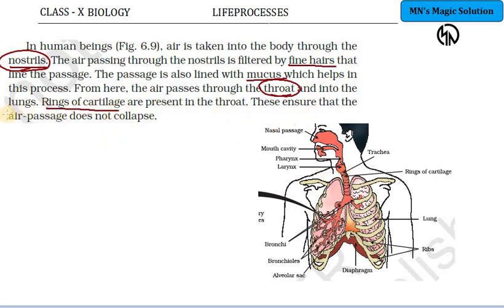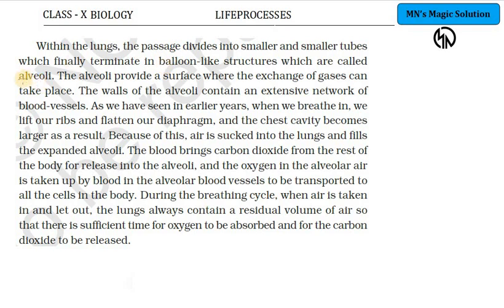The throat has rings of cartilage which do not allow the air passage to collapse. For example, like a balloon — when air goes out of it, it collapses. But in our airways, even when we breathe in or breathe out, the rings of cartilage prevent the airway from collapsing. From the throat, air enters the lungs through the bronchi, which divide into bronchioles, and the bronchioles end in alveolar sacs. Thousands of alveoli are present inside, providing a surface where exchange of gases takes place.